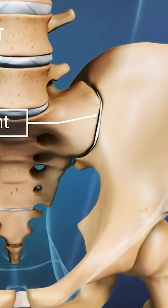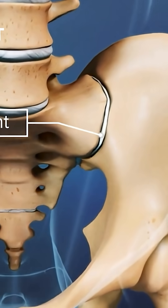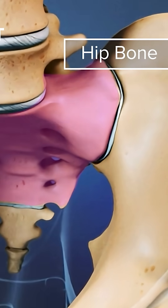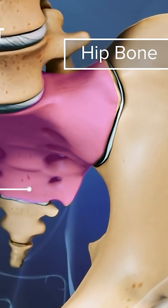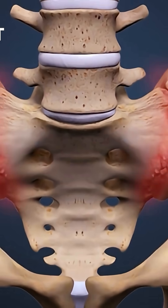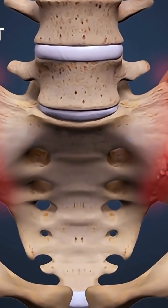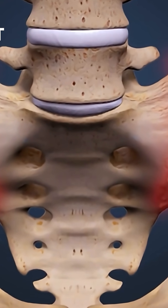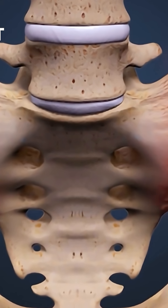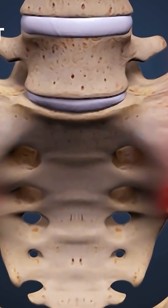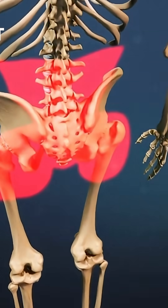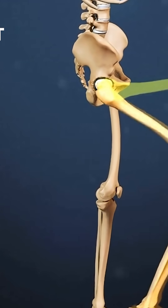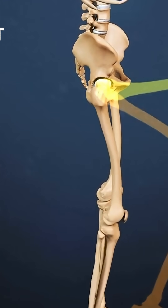Dysfunction of the sacroiliac joints is another cause of lower back pain. These joints connect the triangular-shaped sacrum to the hip on each side of the spine. The sacroiliac joints can become painful due to chronic trauma or an acute injury. Sacroiliac joint pain is similar to sciatica and is typically felt in the lower back, buttock, and thigh, along with a feeling of weakness and instability during certain movements or activities.